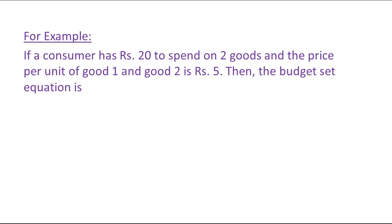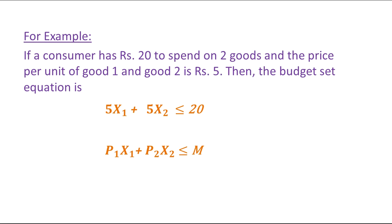For example, if a consumer has rupees 20 to spend on two goods and the price per unit of good one and good two are both rupees 5, then the budget set can be written as 5X1 plus 5X2 is less than or equal to 20. Here we are replacing P1 with 5, P2 with 5, and M with 20 in the general equation P1X1 plus P2X2 ≤ M.